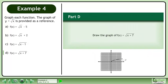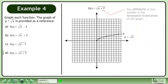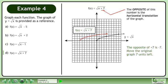In part d, draw the graph of f equals the square root of x plus 7. The opposite of this number is the horizontal translation of the graph. The opposite of positive 7 is negative 7, so move the original graph seven units left.